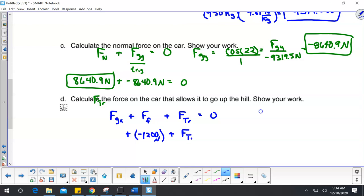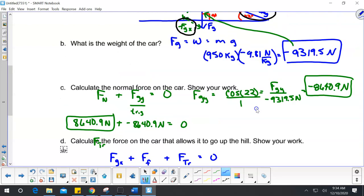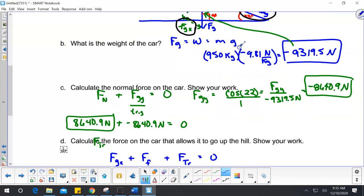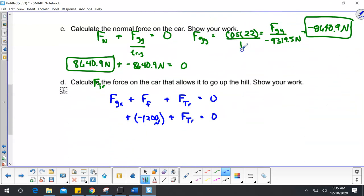I'm going to solve for force traction. Now, I can go up and I can solve for this force FGX. So if I want to use the sine function, I would say a sine of 22 equals force gravity in the x over my force gravity, which was a negative 9,319.5.